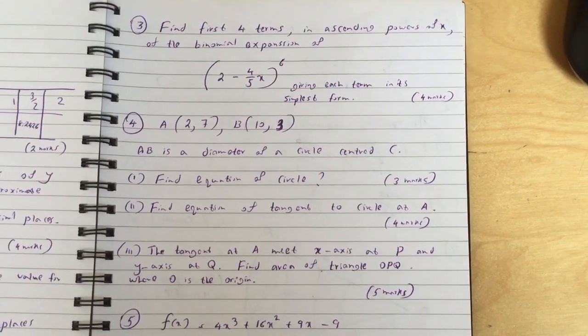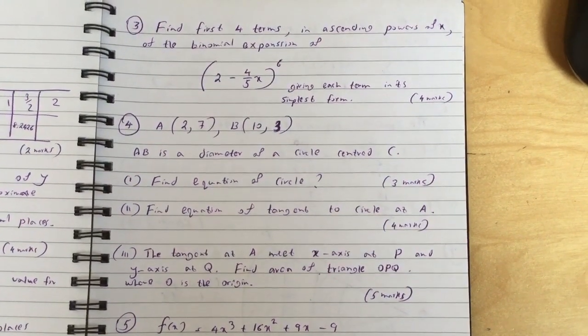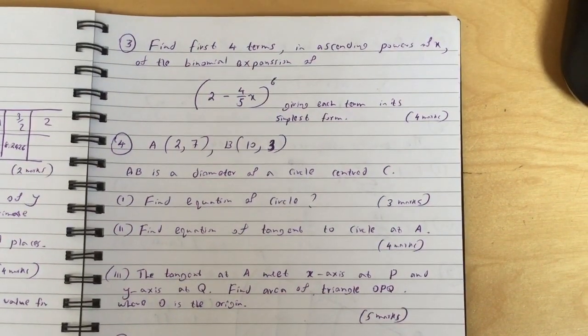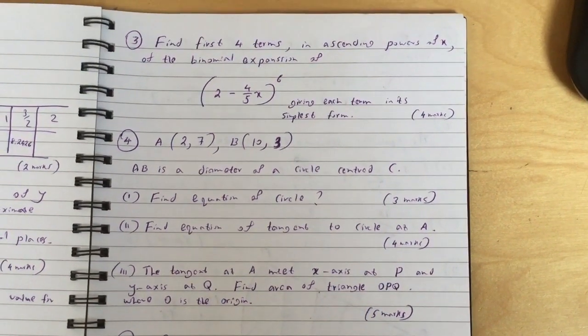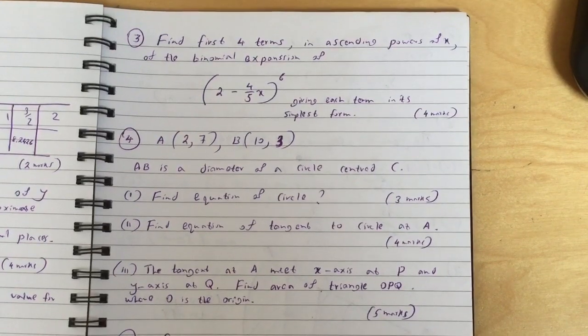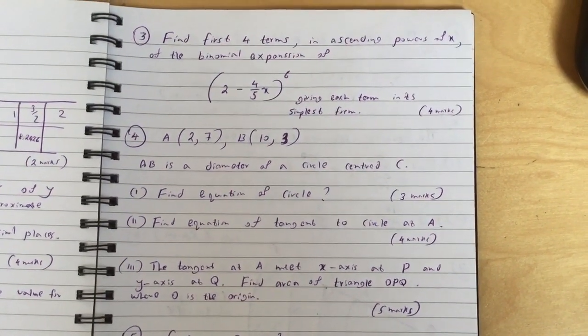Question four: A(2,7), B(10,3), where AB is a diameter of a circle centered C. Find the equation of circle.